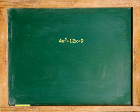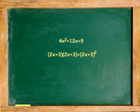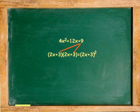The second example, 4x² + 12x + 9, can be factored as (2x + 3)(2x + 3), or (2x + 3)², because the square root of 4x² is 2x and the square root of 9 is 3.